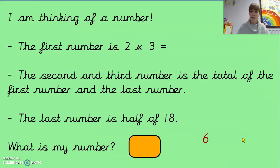The second and third number is the total of the first number and the last number. Now I can't work that one yet because I actually don't know what the last number is. So we're going to the third one. The last number is half of 18. I know that's nine. There we go.